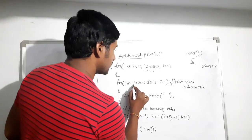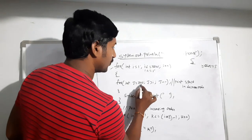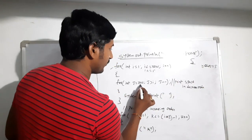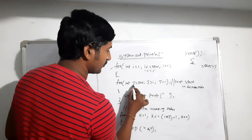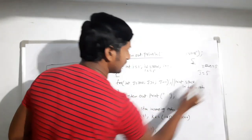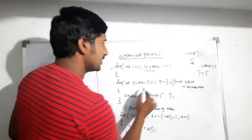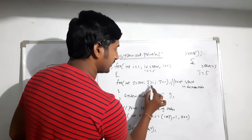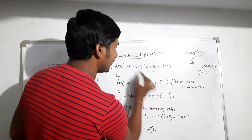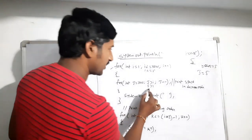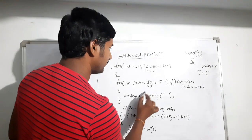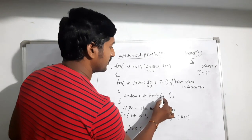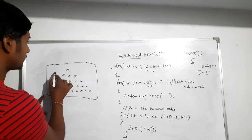In the inner for loop, int j equal to row — row means five, so j holds five. Now j greater than i: i is one, so the condition is true. It comes into the loop body and prints the first space.